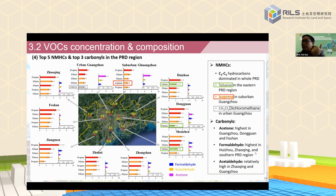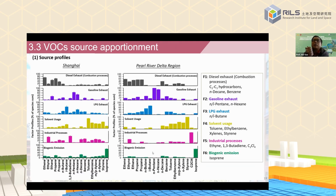In the PRD region, C2–C3 hydrocarbons dominate throughout the region, while toluene was mainly found in the eastern PRD including Dongguan and Shenzhen. Isoprene, a biogenic emission from vegetation, was found in suburban Guangzhou, which is unsurprising. Dichloromethane was mainly found in urban Guangzhou. For OVOCs, acetone was higher in Dongguan, Guangzhou, and Foshan, while formaldehyde was higher in Huizhou, Zhaoqing, and southern PRD.